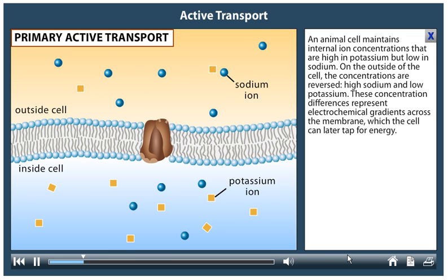These concentration differences represent electrochemical gradients across the membrane, which the cell can later tap for energy.